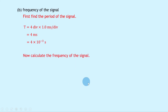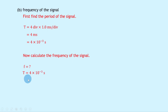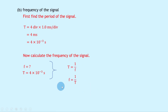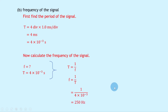Now to calculate the frequency we use the relationship between frequency and period. We know T is 4 × 10⁻³ seconds. Using F equals 1 over T, substituting in gives 1 over 4 × 10⁻³, which gives a final answer of 250 hertz.